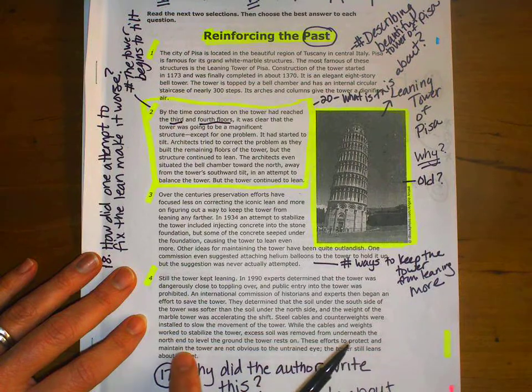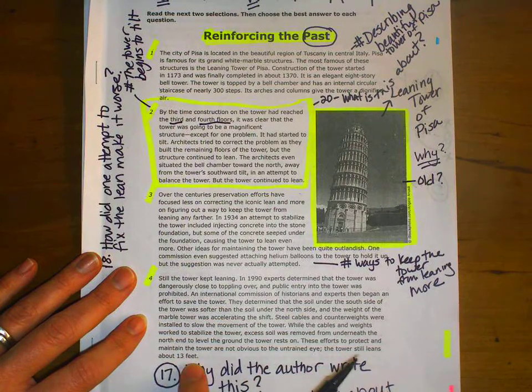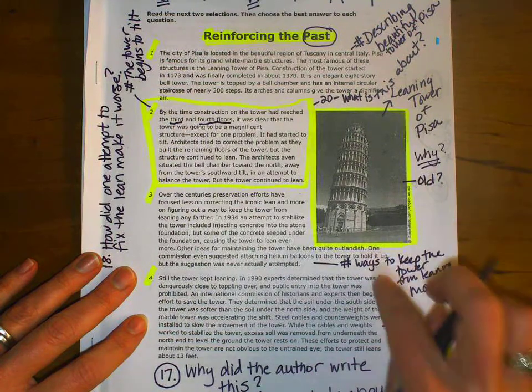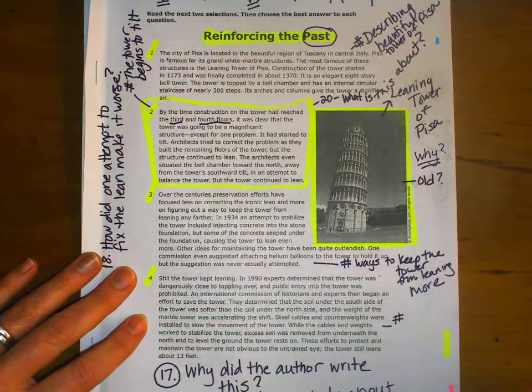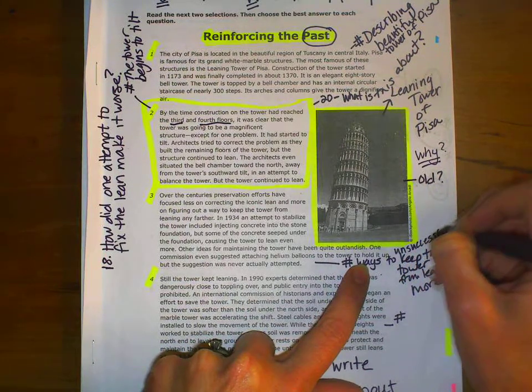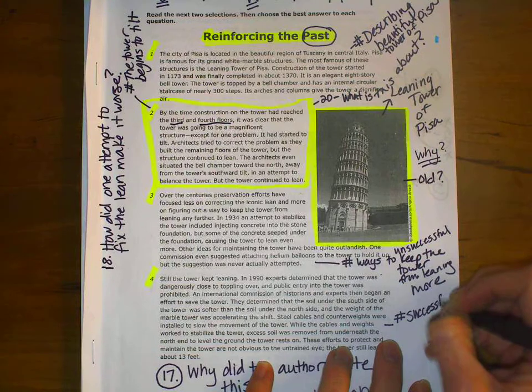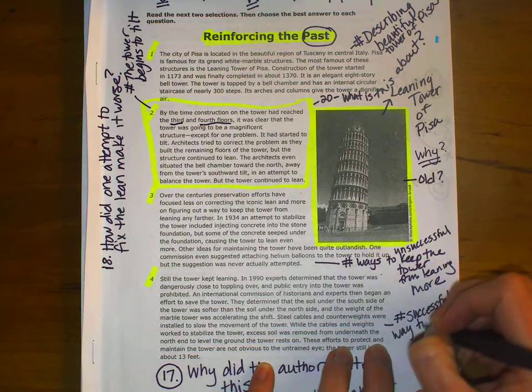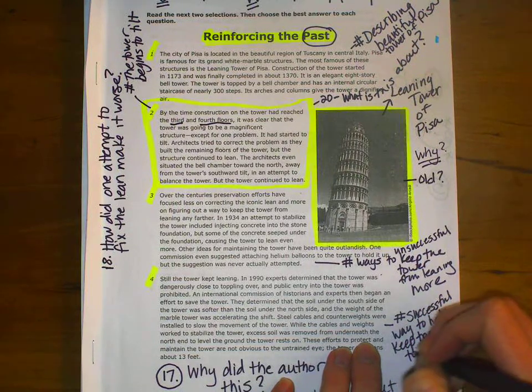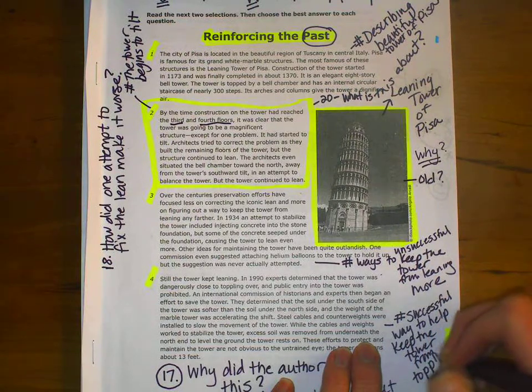These efforts to protect and maintain the tower are not obvious to the untrained eye. The tower still leans about 13 feet. So I'm going to say, I'm going to clarify this one, because this was about unsuccessful ways to keep the tower from leaning more. And this one is more successful way to help keep the tower from toppling over.